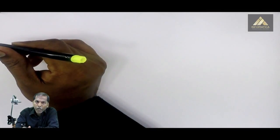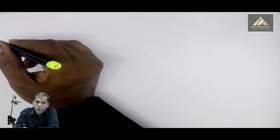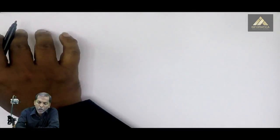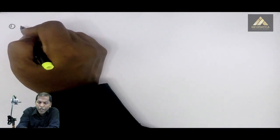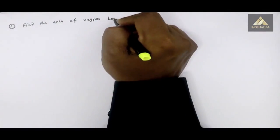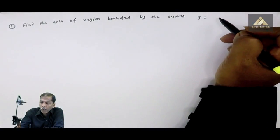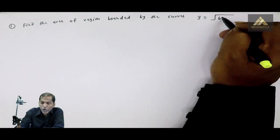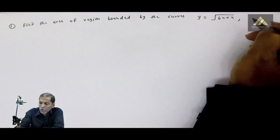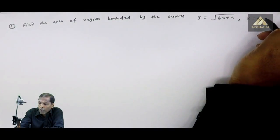Let us solve some problems related to the topic area under the curve to clear our ideas. The first question is: find the area, y equal to square root of 6x plus 4, x equal to 0, x equal to 2.